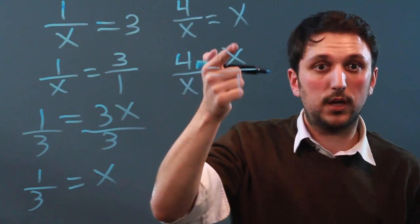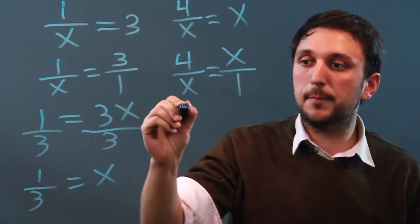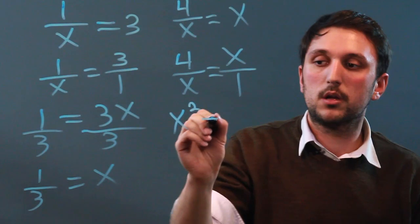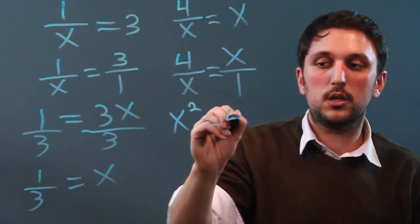Fraction, equal sign, fraction, so we cross multiply. x times x is x squared equals 4 times 1 is 4.